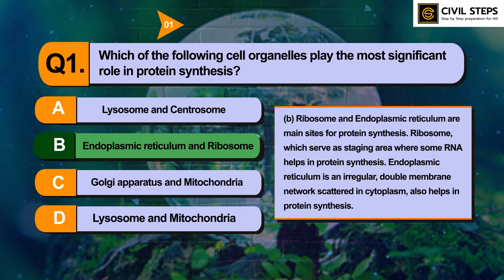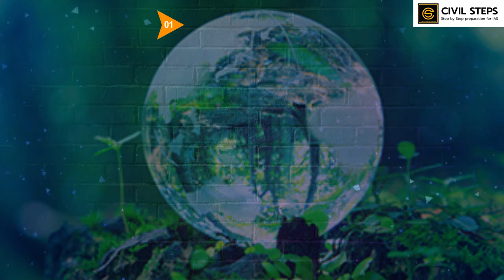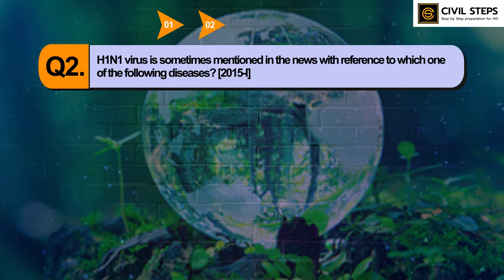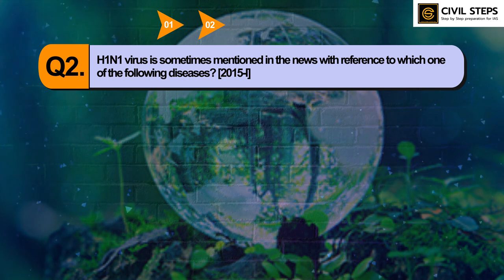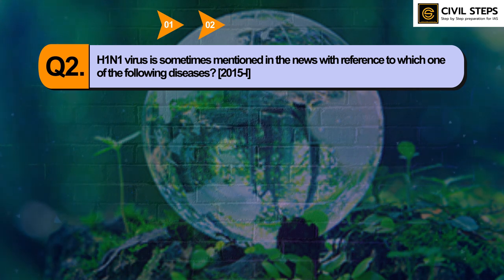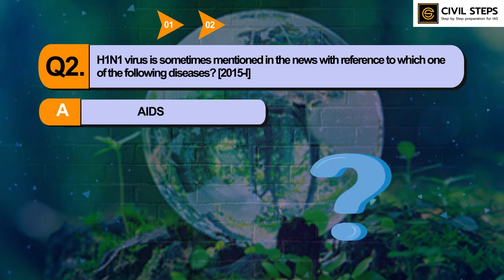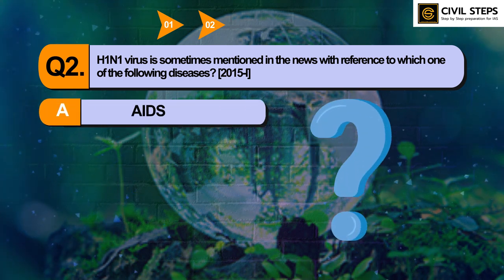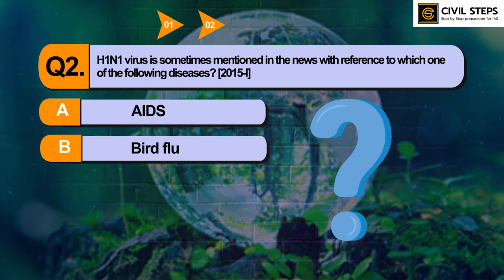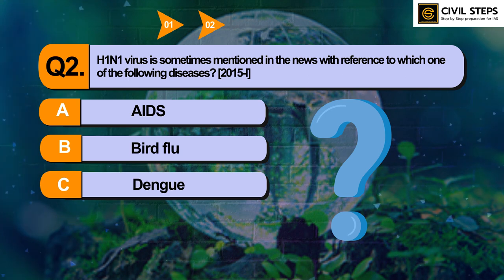Now let us discuss question number 2. H1N1 virus is sometimes mentioned in the news with reference to which one of the following diseases? Option A: AIDS. Option B: Bird flu. Option C: Dengue. Option D: Swine flu.